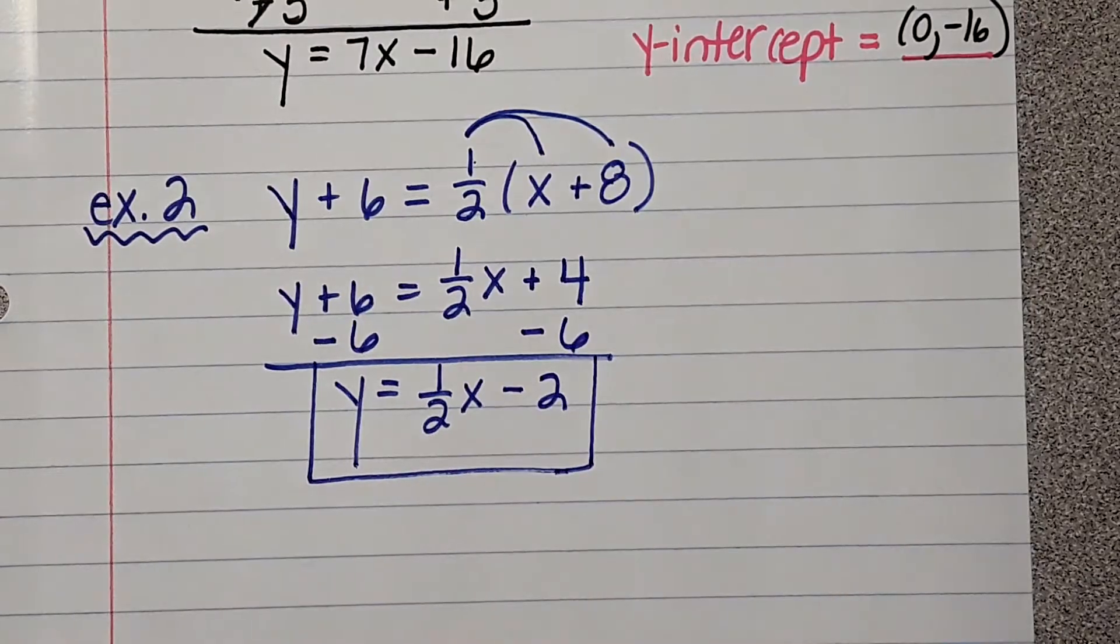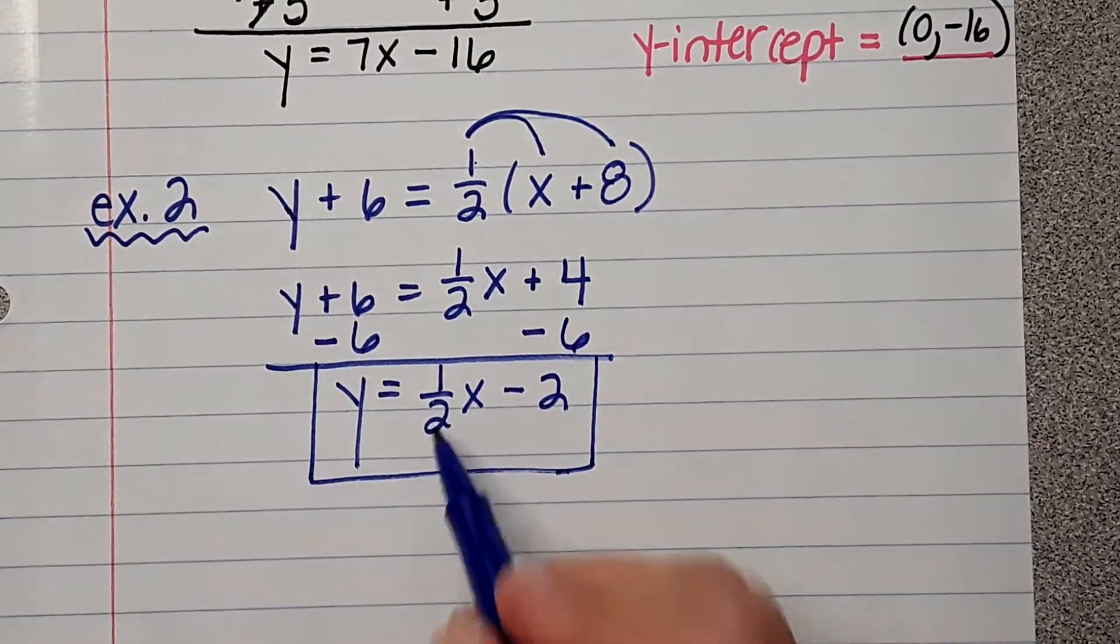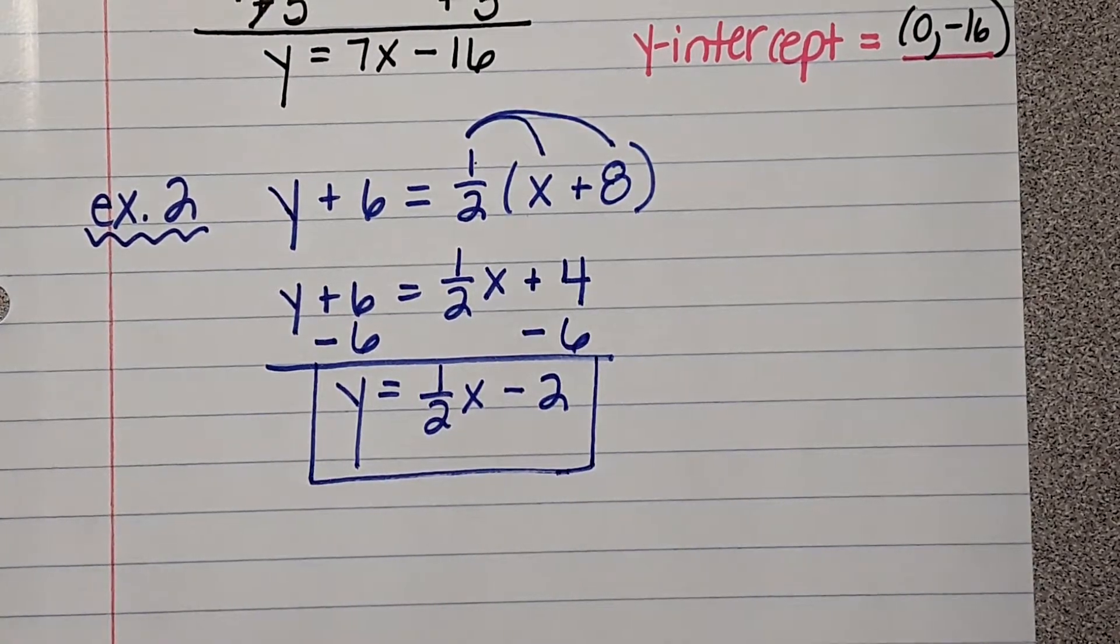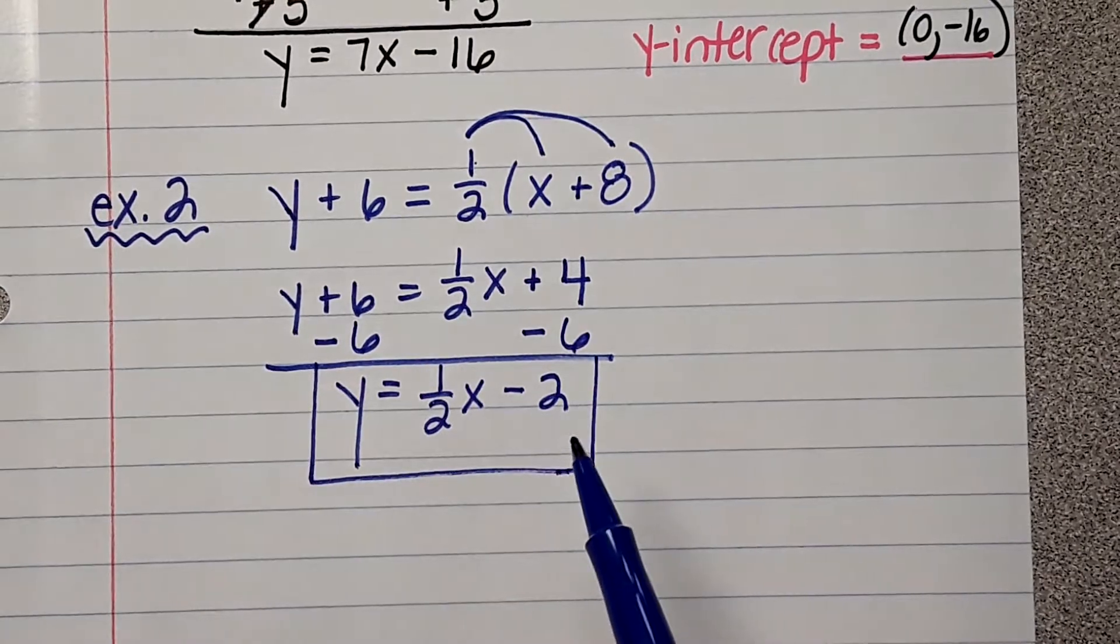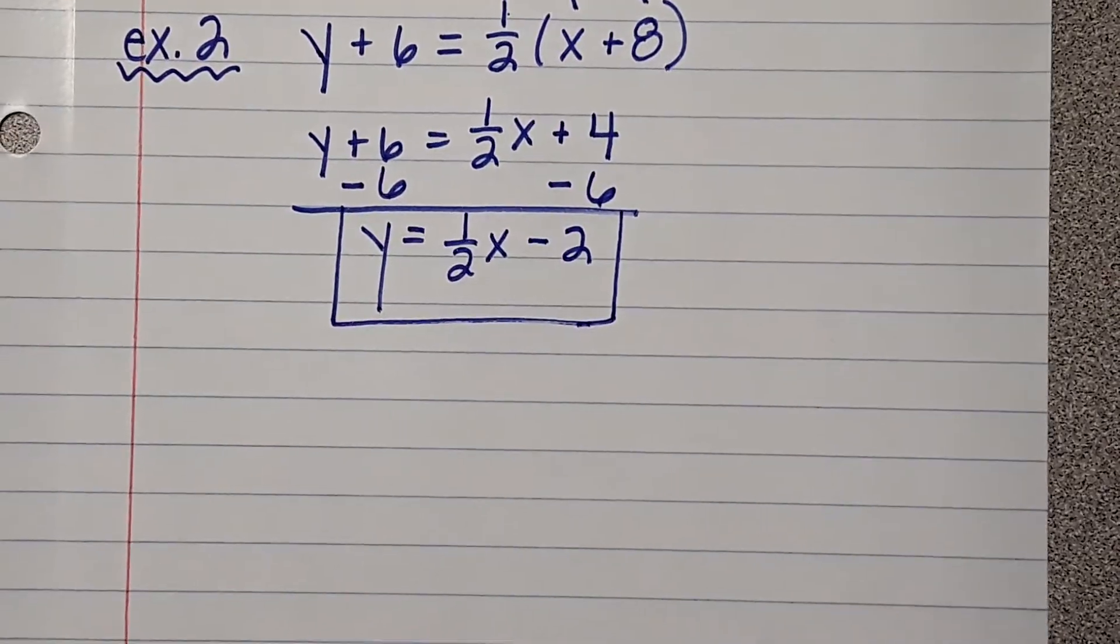I always like to ask you, what is your slope? 1 over 2. So, yep, 1 over 2. 1 half is my slope. And what is my Y intercept? 0 negative 2. 0 negative 2. You guys, that means that's where we're going to start if we were to graph our line.